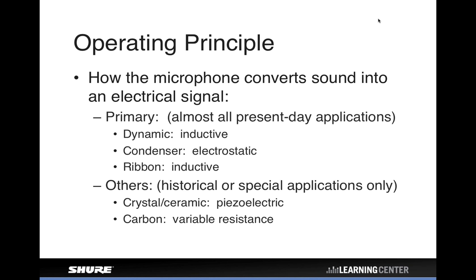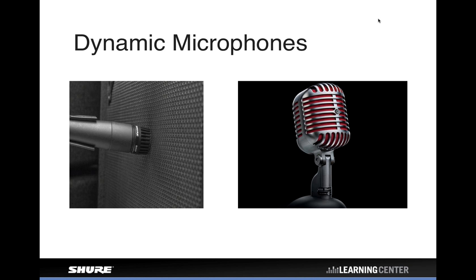There are a couple of ways a microphone can convert sound waves into electrical energy. The primary ones you find most commonly today are the dynamic microphone and, close behind it, the condenser microphone. Ribbon microphones — a close cousin of the dynamic — were more historical but have recently had a comeback. Other technologies like crystal, carbon, and controlled magnetic microphones have mostly fallen by the wayside.